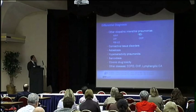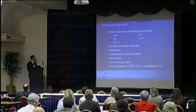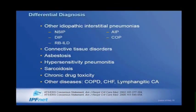Differential diagnosis. The first thing you're going to think of is other idiopathic interstitial pneumonias. Also connective tissue disorders, asbestosis — which produces UIP — and hypersensitivity pneumonitis.